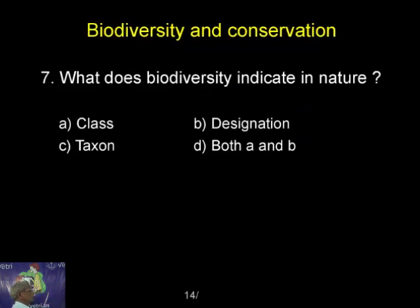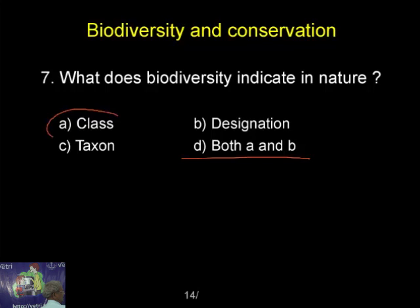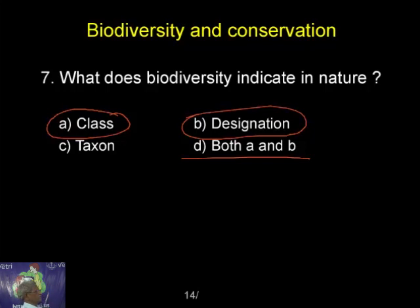What does biodiversity indicate in nature? It represents both a class and a designation. So both a and b are the right choices, which means d is the correct answer.